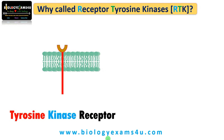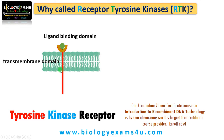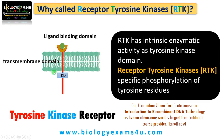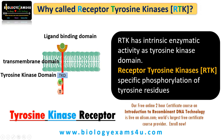Why is this receptor called receptor tyrosine kinase? This is the receptor — it has a ligand binding domain where the ligand binds, then a transmembrane domain embedded on the plasma membrane, and then an intracellular domain where there is a tyrosine kinase domain. This RTK has intrinsic enzyme activity as a tyrosine kinase domain, which specifically phosphorylates tyrosine residues on the receptor. That is why this receptor is called a tyrosine kinase receptor.